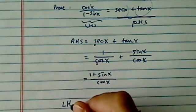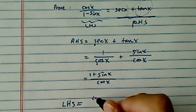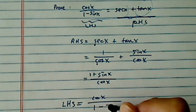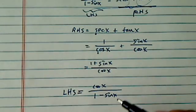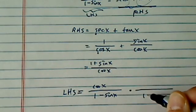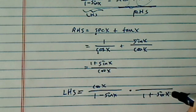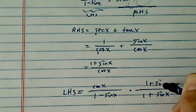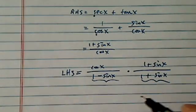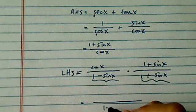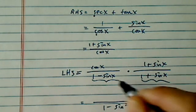So now let's go to the other side and see what we can do. On the left hand side, I have cosine X over 1 minus sine X. It doesn't immediately simplify, however, if I multiply by its conjugate, then I can use the difference of squares.